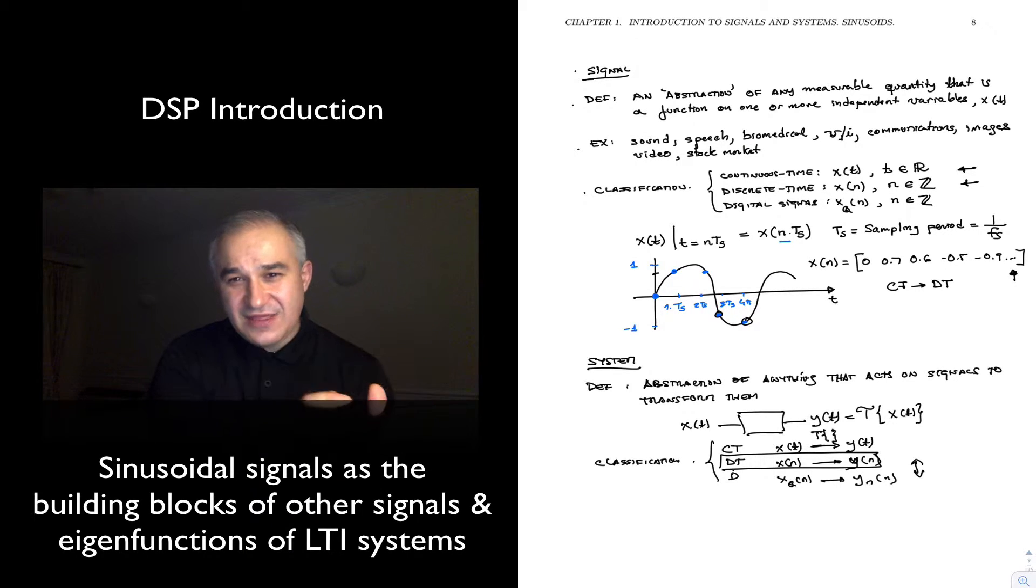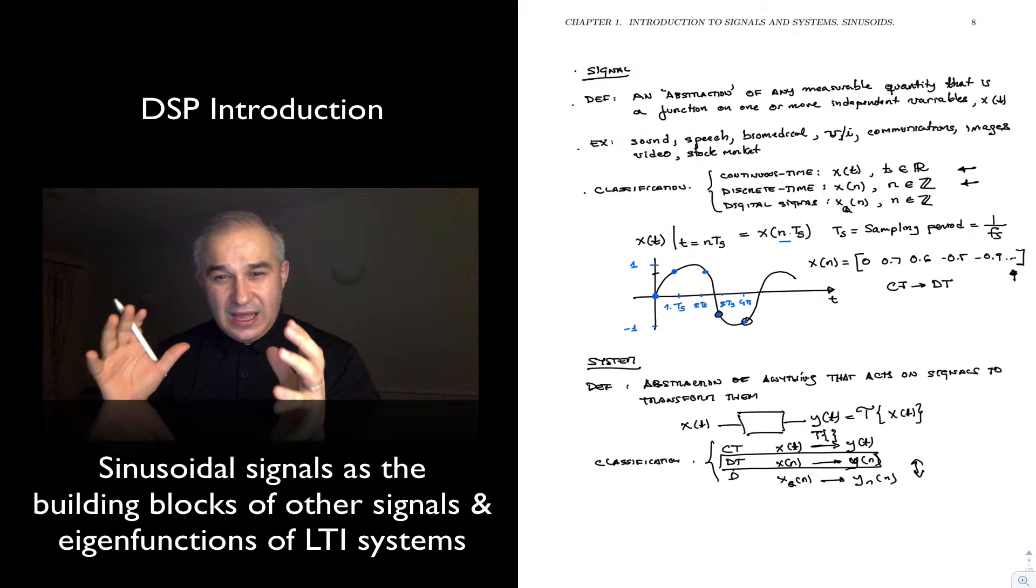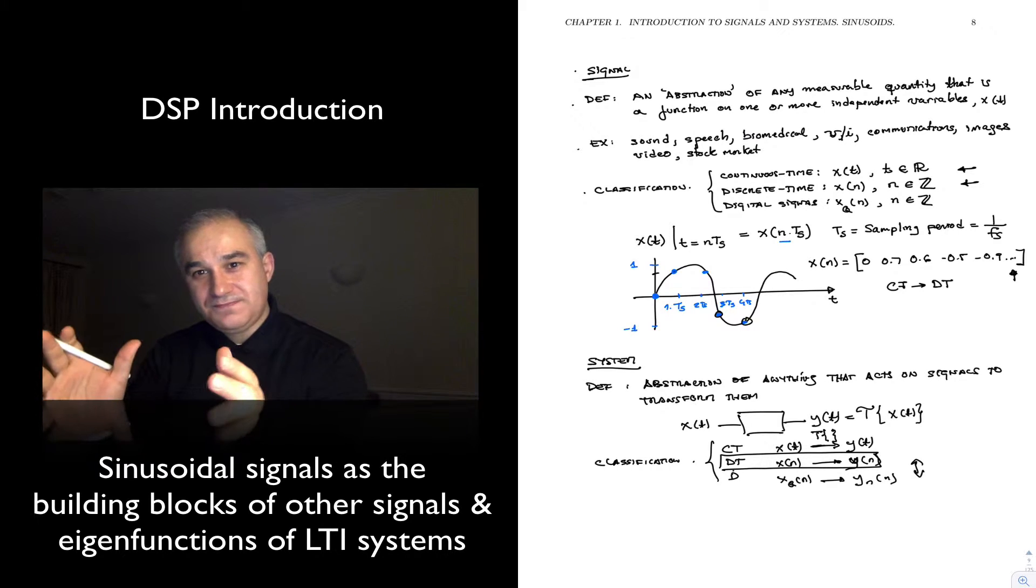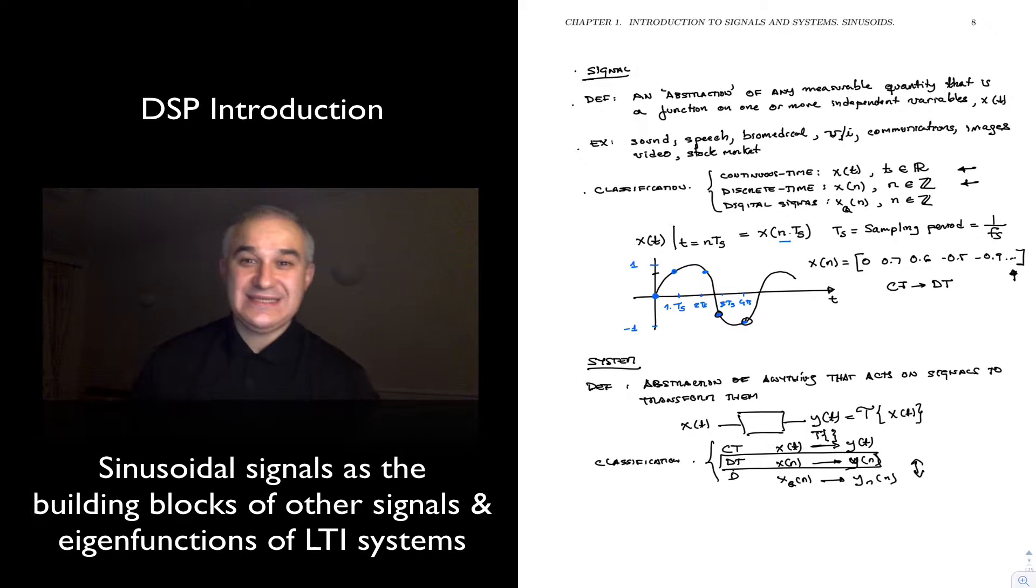Fundamentally, anything that changes with time, space, as a function, any independent variable is a signal. And if something changes, whatever acted on the signal for it to change is a system.